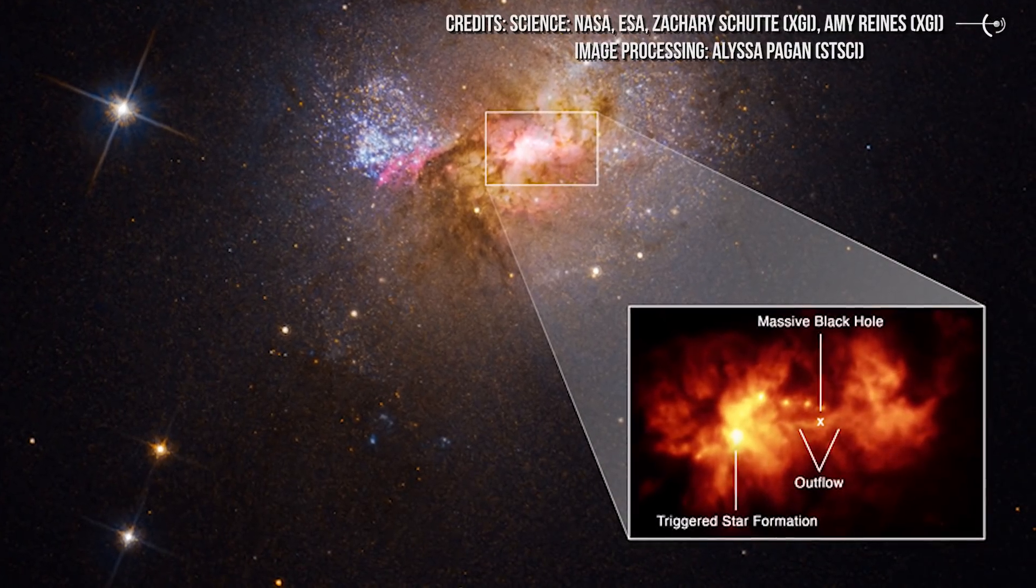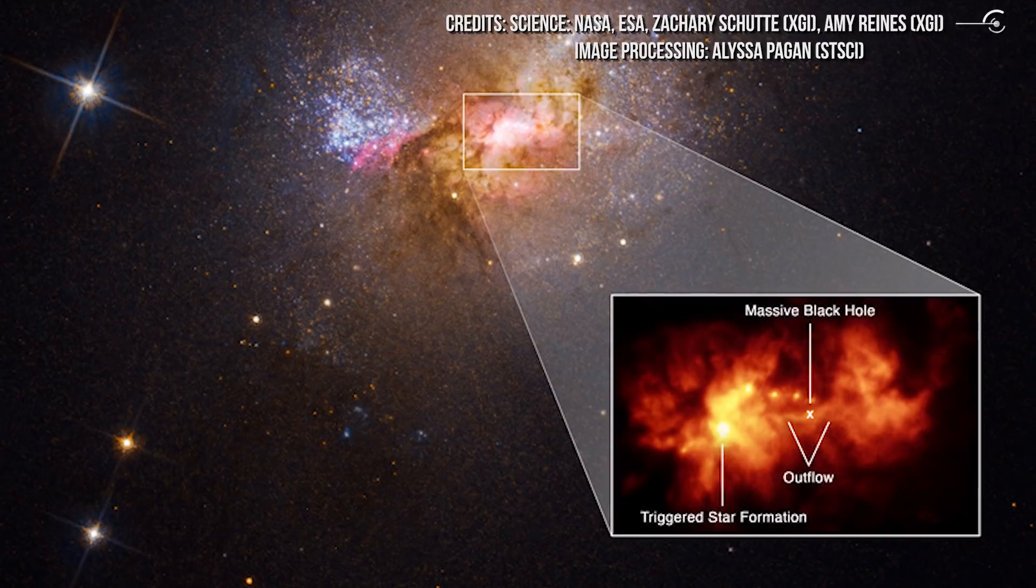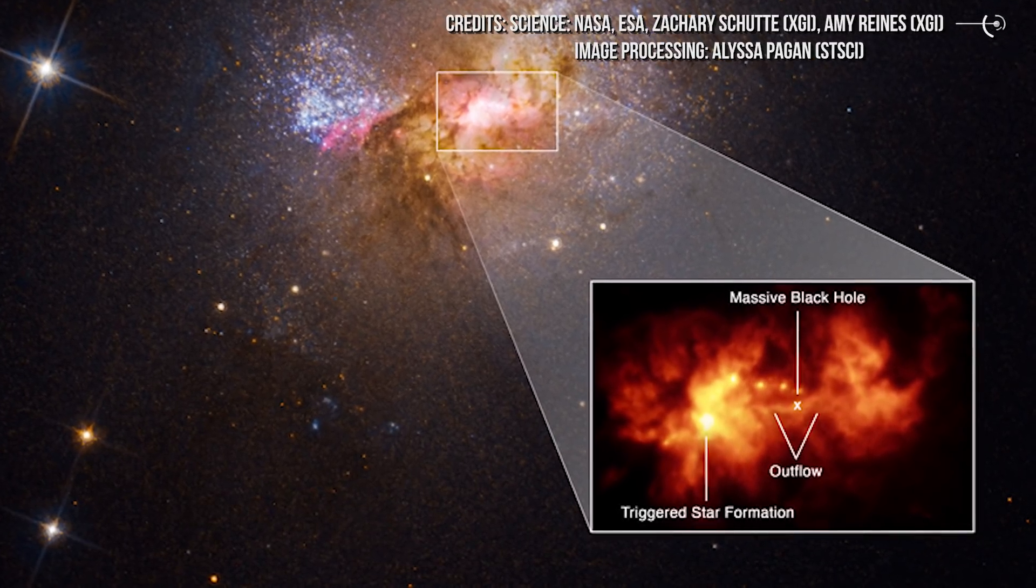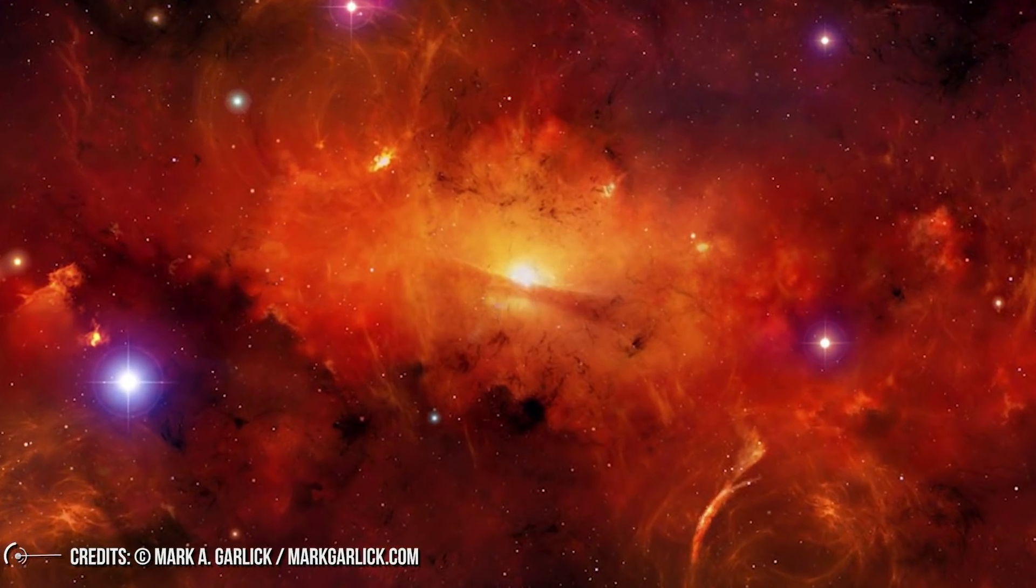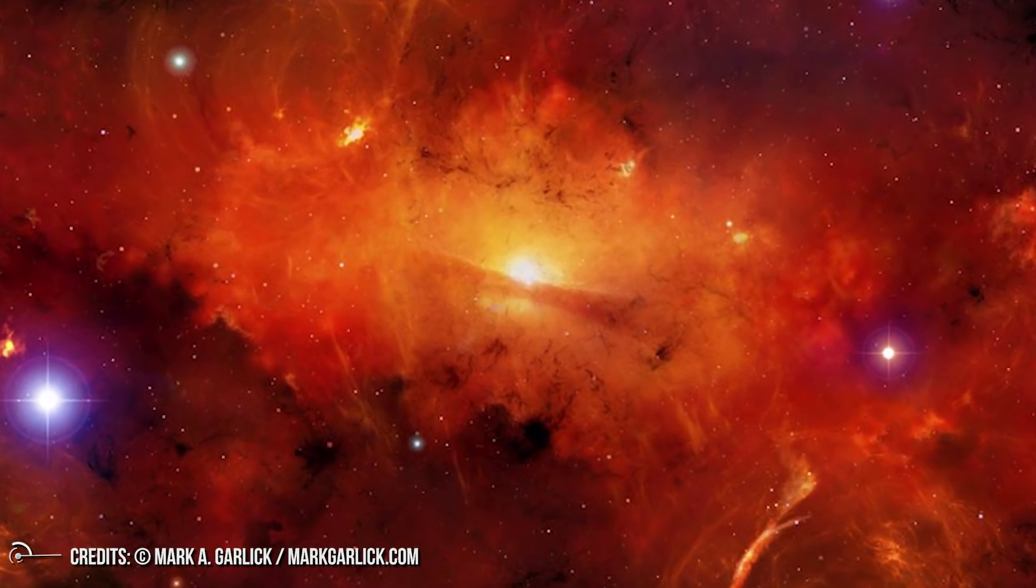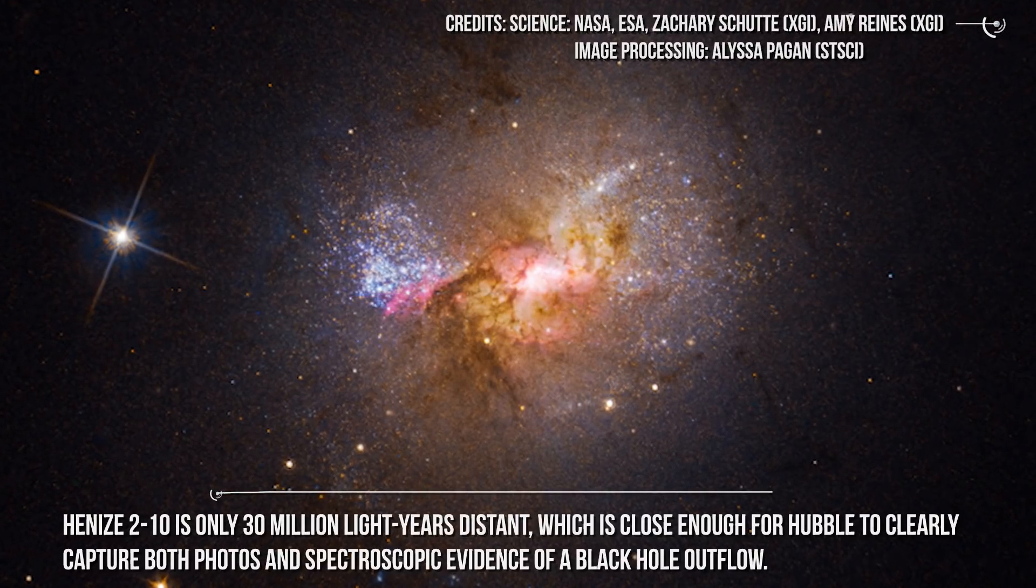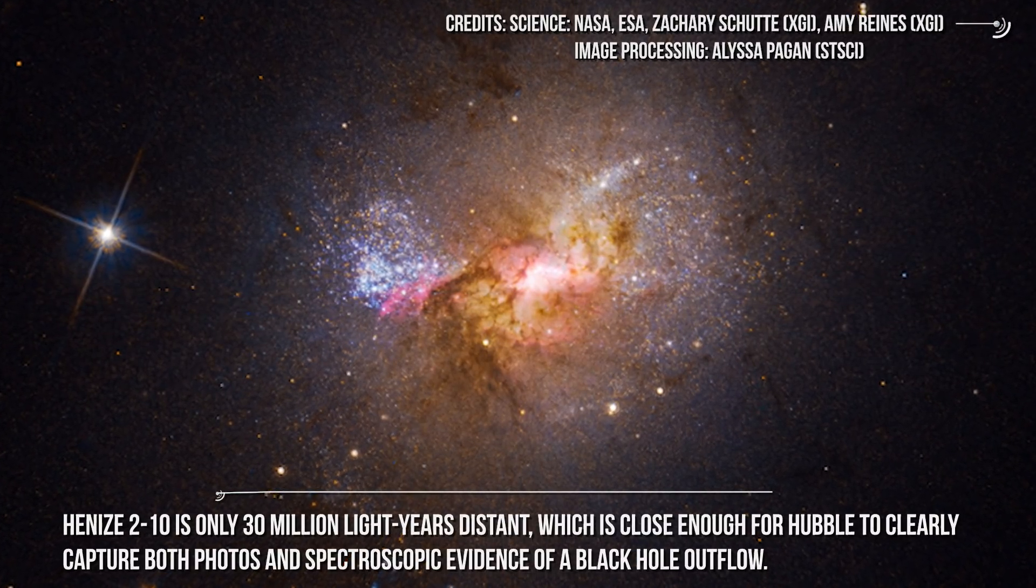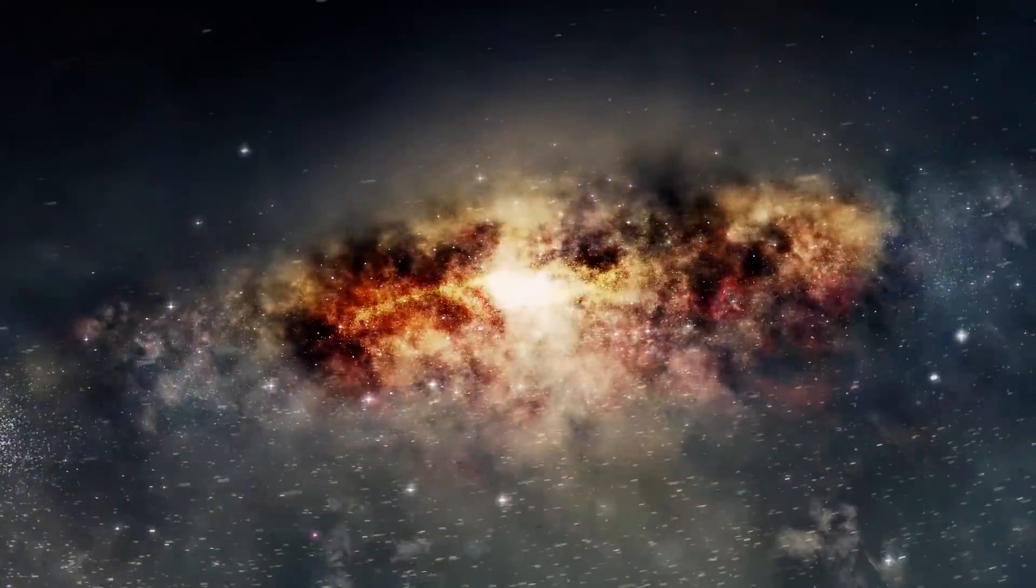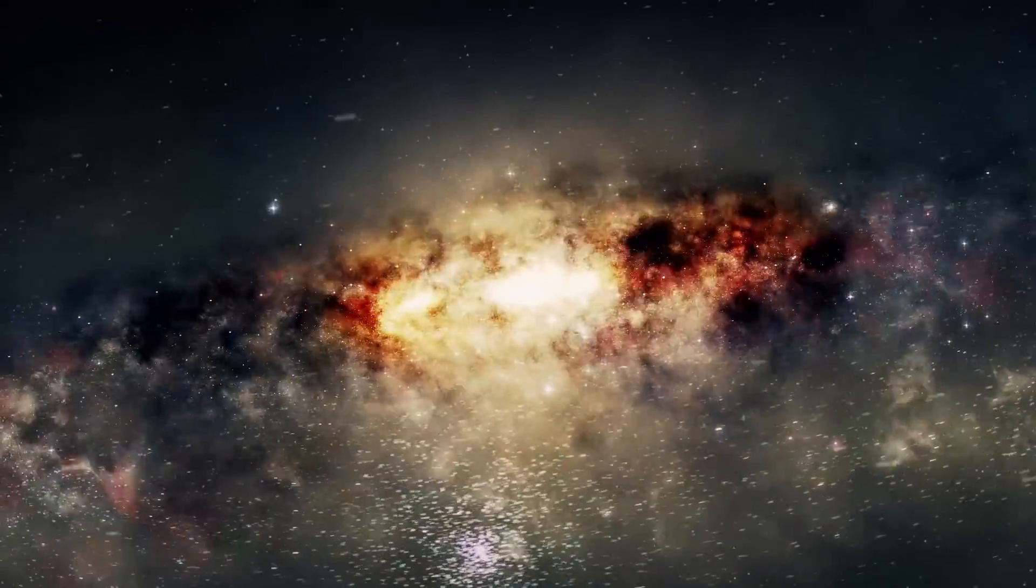Hubble determined the ages of newborn star clusters that dot the root of the outflow's propagation. The Hubble images clearly show that the gas stretching in the galaxy is definitely produced by the black hole in the center, with scientists even comparing it to a kind of umbilical cord that appears to stretch from the black hole to the star-forming region, which is somewhat symbolic in a sense because it appears to be the only black hole we know of that is physically forming new stars through the emissions from its jets. Henize 210 is only 30 million light-years distant, which is close enough for Hubble to clearly capture both photos and spectroscopic evidence of a black hole outflow. The outflow was also surprising in that rather than inhibiting star formation, it was causing new stars to develop.